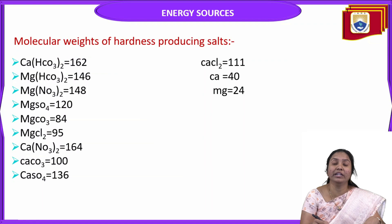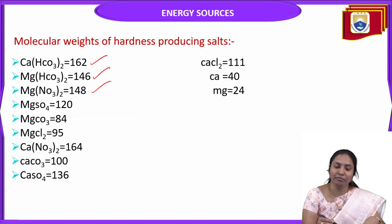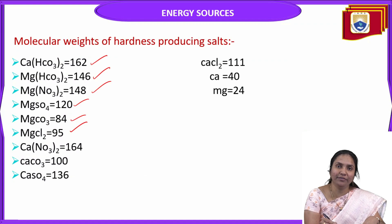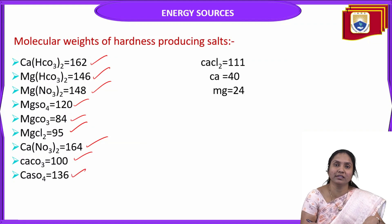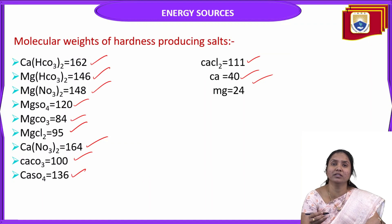The molecular weights of commonly used hardness-causing salts are important for numerical calculations: calcium bicarbonate = 162, magnesium bicarbonate = 146, magnesium nitrate = 148, magnesium sulphate = 120, magnesium carbonate = 84, magnesium chloride = 95, calcium nitrate = 164, calcium carbonate = 100, calcium sulphate = 136, calcium chloride = 111, calcium = 40, magnesium = 24.